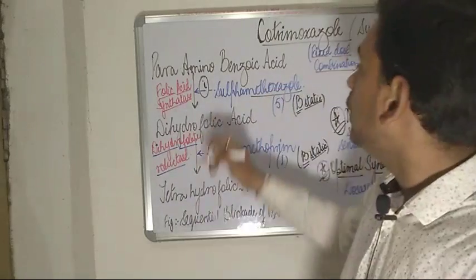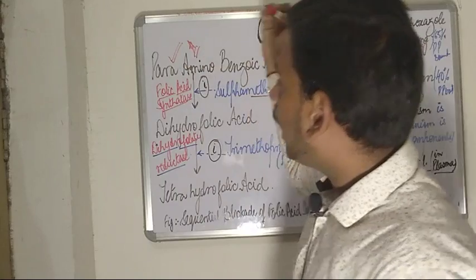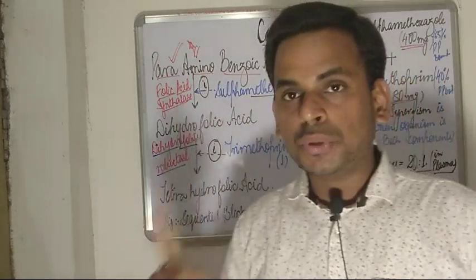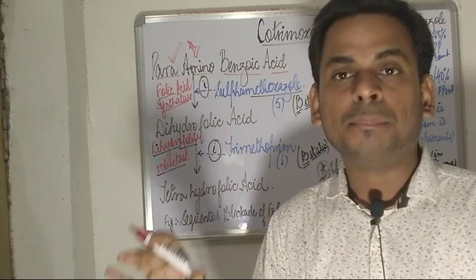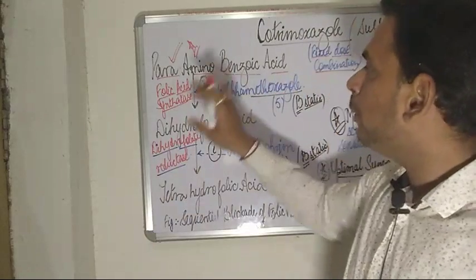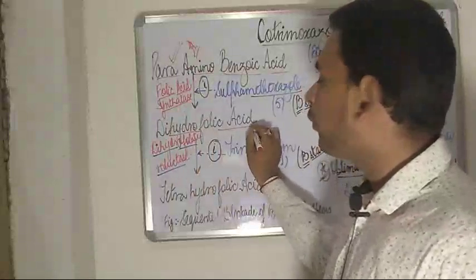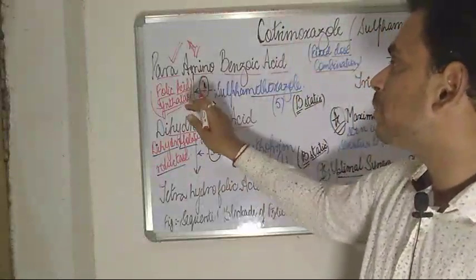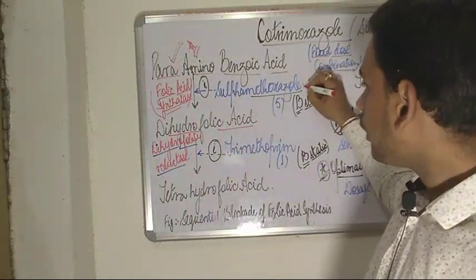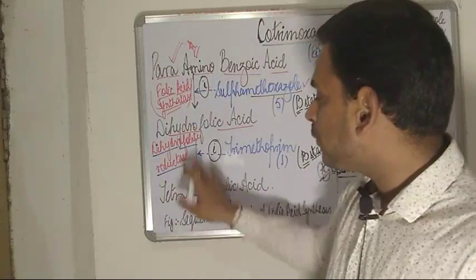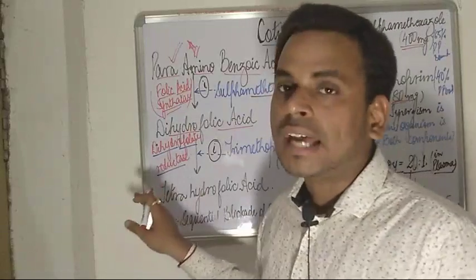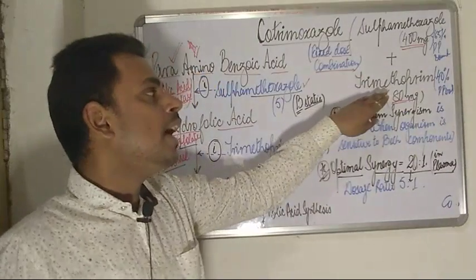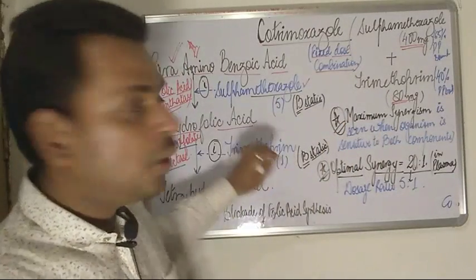Beginning with the mechanism of action: the first important chemical compound from which folic acid is synthesized by the bacterial cell is para-aminobenzoic acid (PABA). This para-aminobenzoic acid is converted into dihydrofolic acid in the presence of the enzyme folic acid synthase. Then, dihydrofolic acid is further reduced to tetrahydrofolic acid in the presence of the enzyme dihydrofolate reductase.